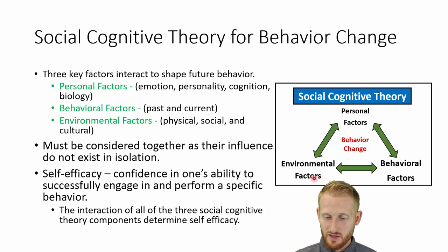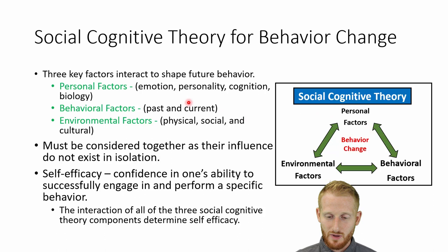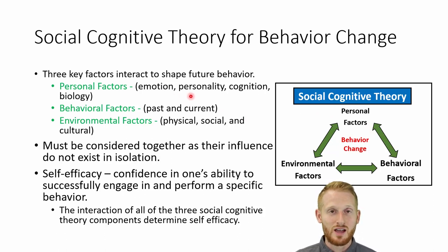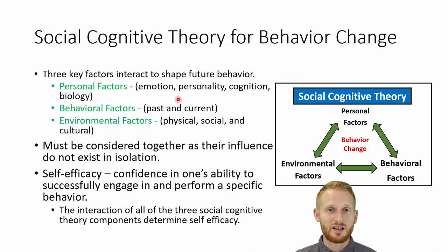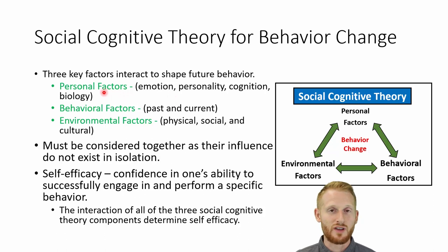These three things — personal factors, behavioral factors, and environmental factors — we'll talk about each individually. Personal factors include the emotional state of the individual, their personality, cognition, as well as their biology — anatomy, physiology, and so on. Basically anything biological or psychological about the individual falls under the personal factors part of the social cognitive theory.